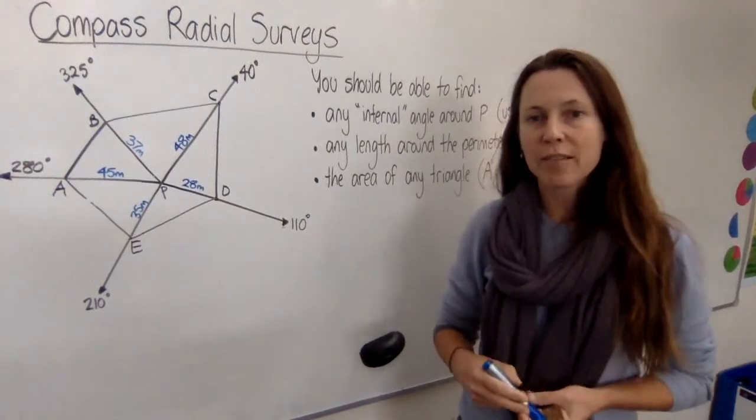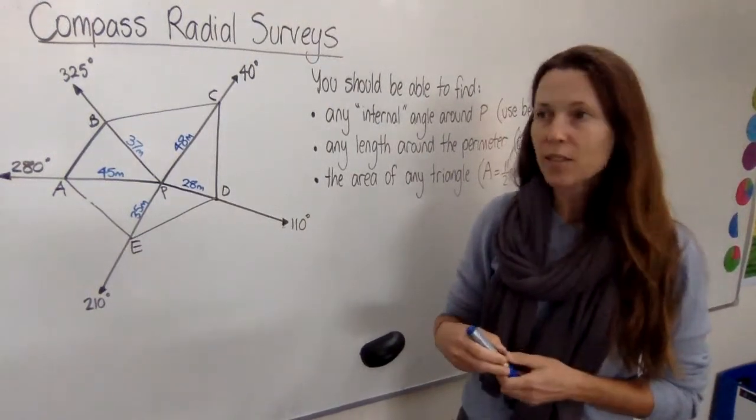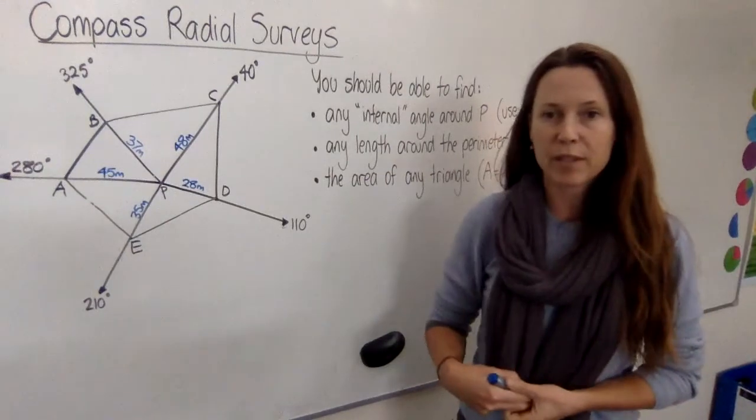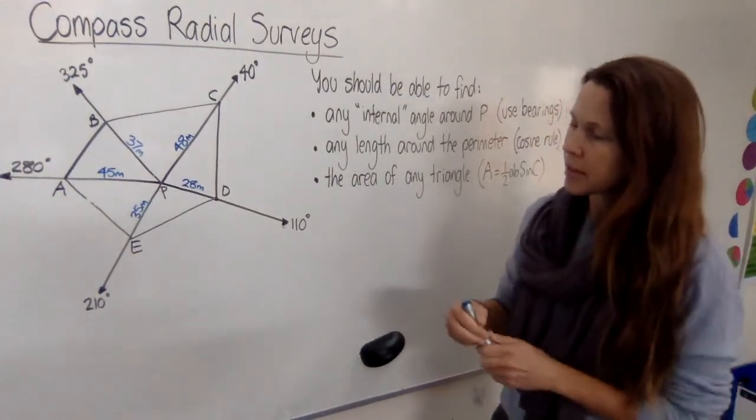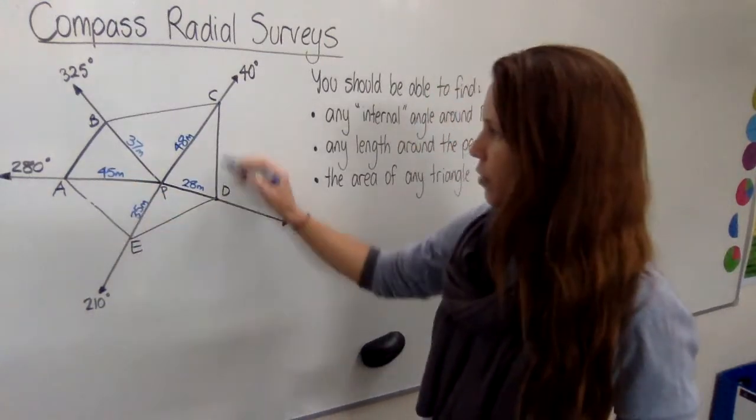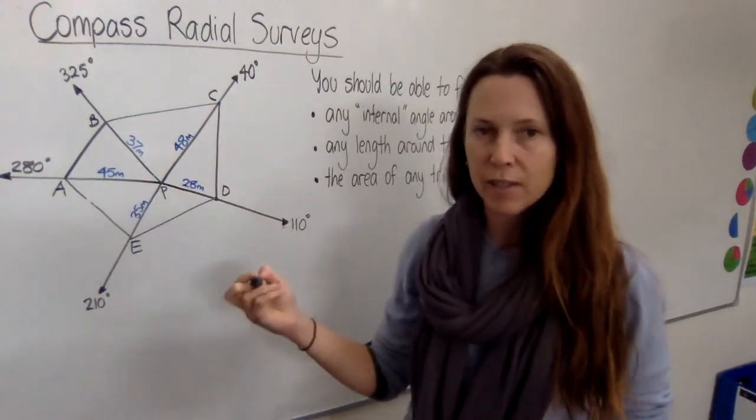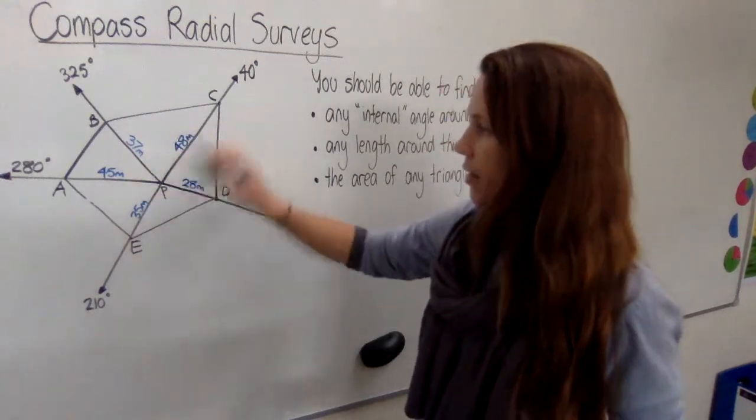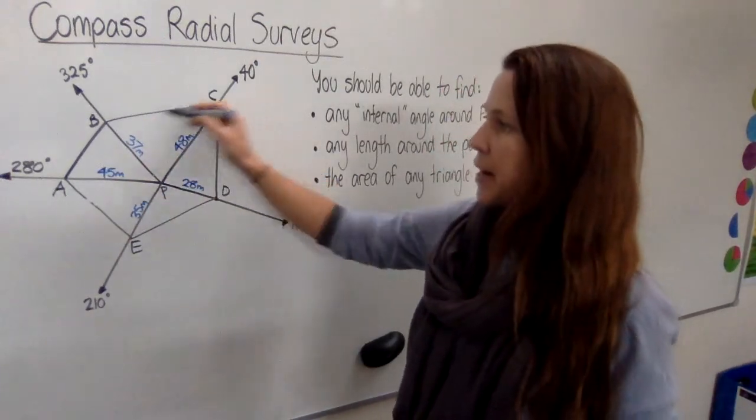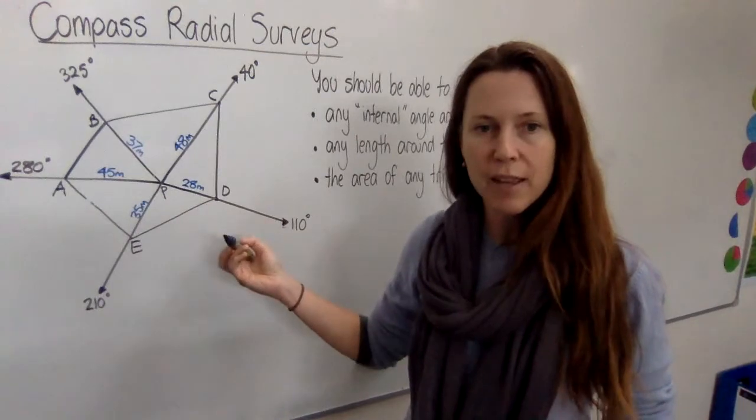Compass radial surveys are a really useful tool that surveyors use in real life to find out things about, say, a block of land. The way it works is imagine here we've got a block of land that has straight fences around the outside, and we want to find out how big the area is of that whole block, or perhaps we want to find out how much fence we're going to need to put around the edge.